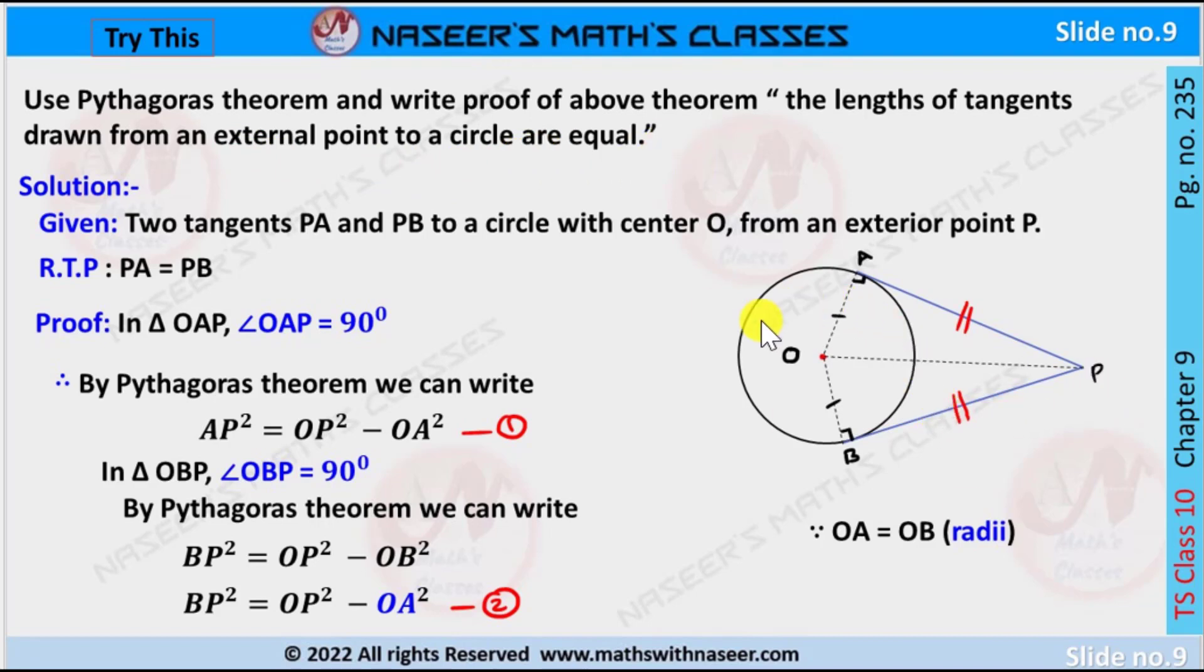From given data, P is the external point to the circle with center O, and PA and PB are the two tangents from the external point P. Then we have to prove that PA is equal to PB. In triangle OAP, angle OAP is 90 degrees.